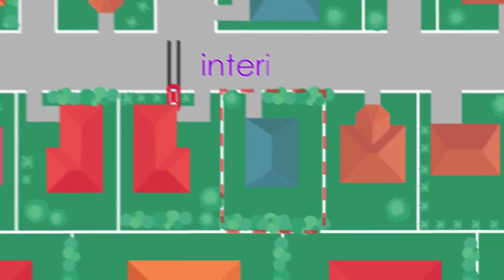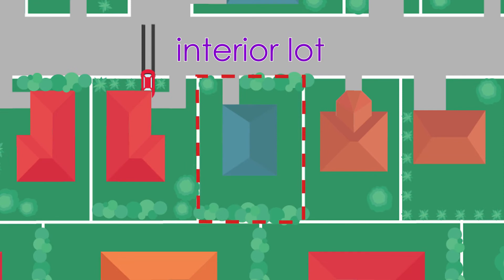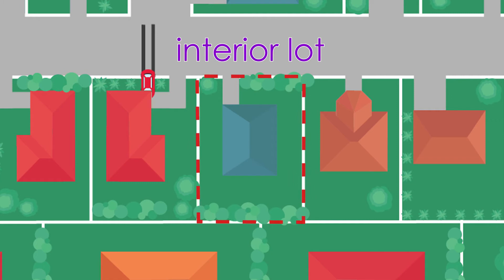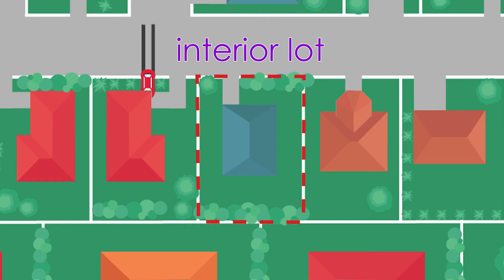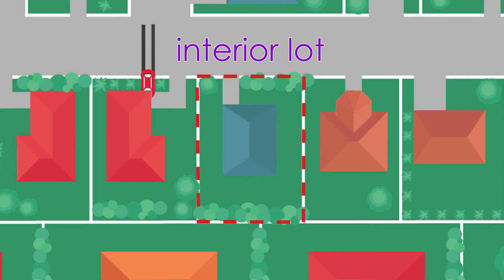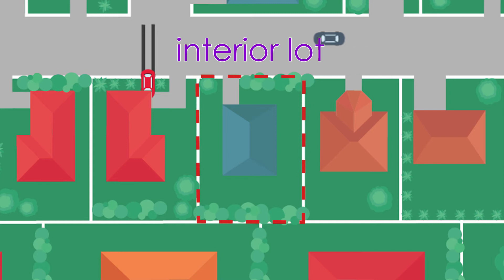Interior lot: a lot surrounded by lots on three sides. This is the most common type of lot. An interior lot is usually rectangular in shape with a large backyard. However, privacy is limited since the lot is adjoined on all sides by neighbors.